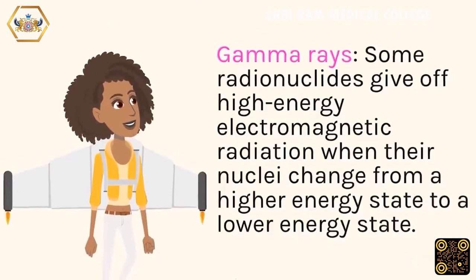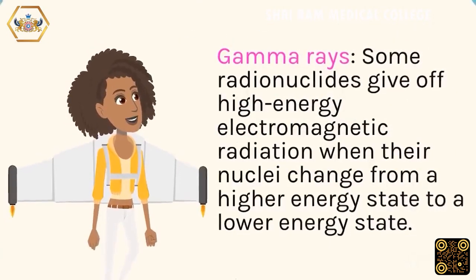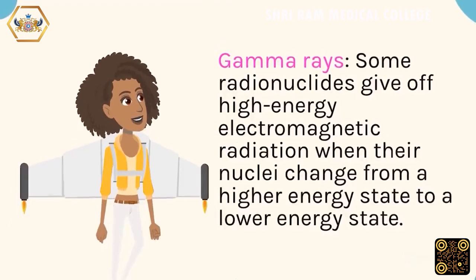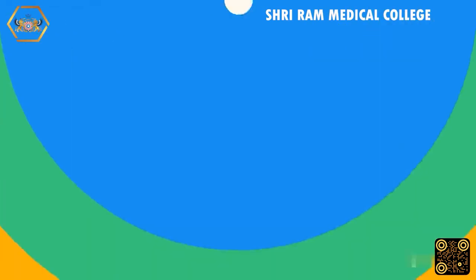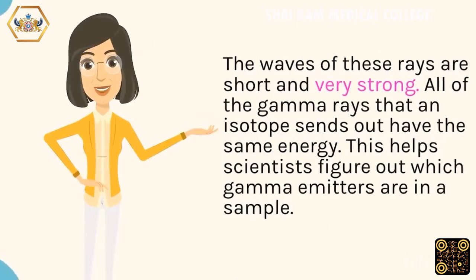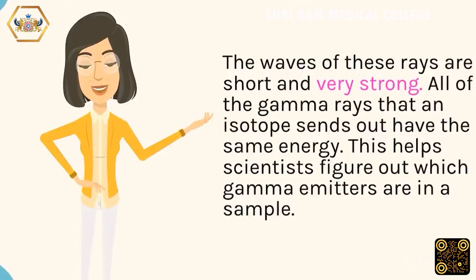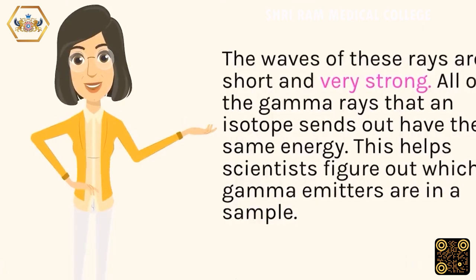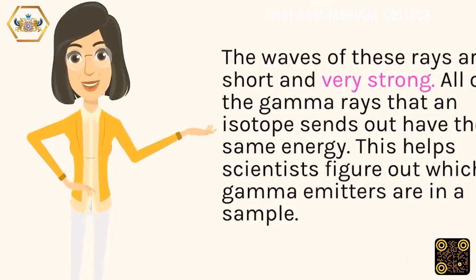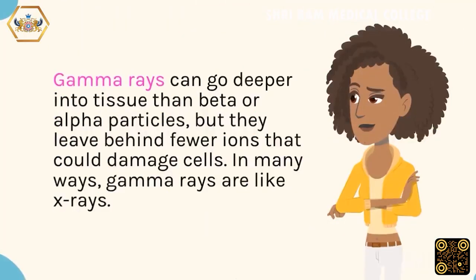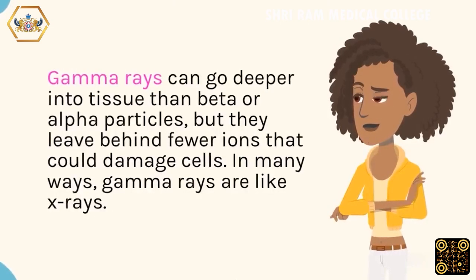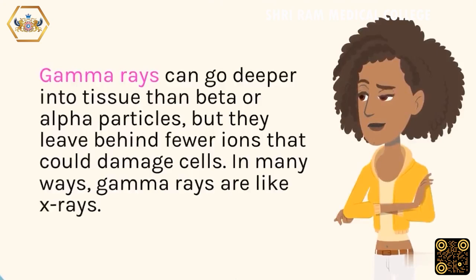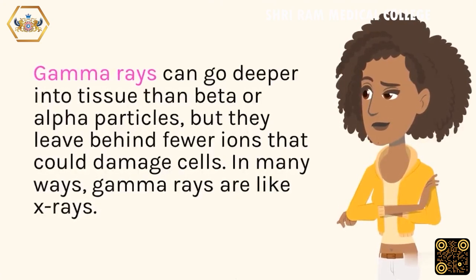Gamma rays: some radionuclides give off high-energy electromagnetic radiation when their nuclei change from a higher energy state to a lower energy state. The waves of these rays are short and very strong. All of the gamma rays that an isotope sends out have the same energy, which helps scientists figure out which gamma emitters are in a sample. Gamma rays can go deeper into tissue than beta or alpha particles, but they leave behind fewer ions that could damage cells. In many ways, gamma rays are like x-rays.